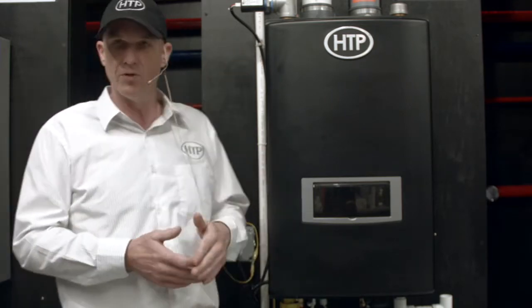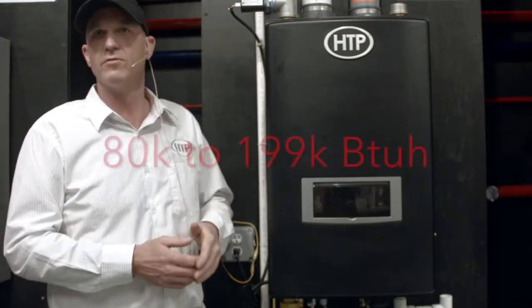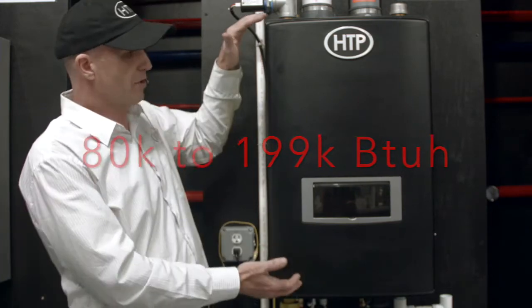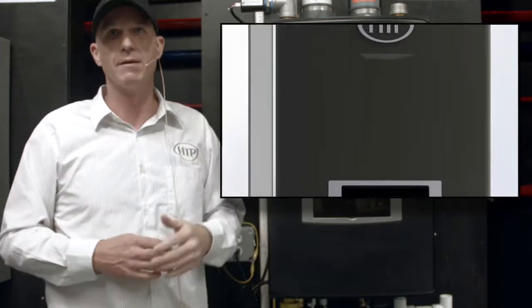This is the UFT or Universal Fire Tube, and this comes in six BTU input ranges from 80,000 up to 199,000 BTUs. This particular version is wall-hung. We offer it as a floor model as well in those same six sizes.